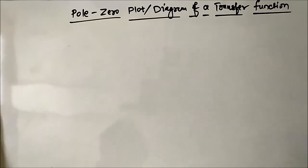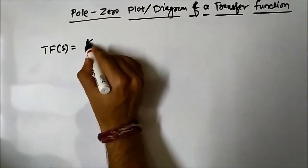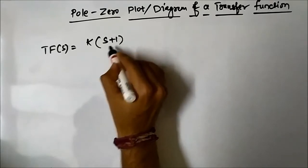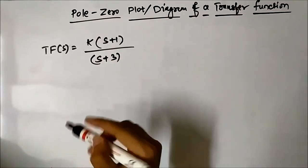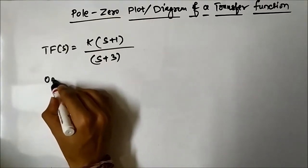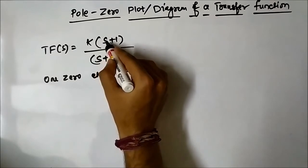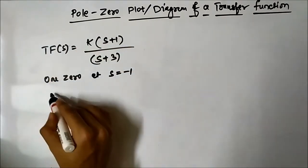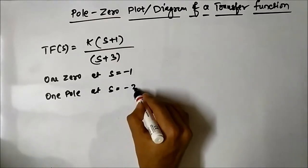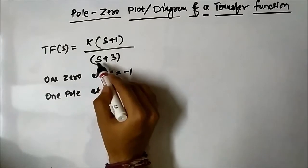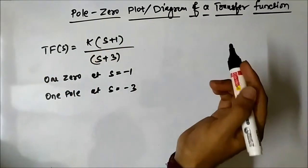Let us start with a simple transfer function. Let's say the transfer function is given by k(s+1)/(s+3). This transfer function has one zero at s equals minus 1 — if we substitute s equals minus 1, the numerator becomes 0 and the transfer function becomes 0 — and one pole at s equals minus 3. If we substitute s with minus 3, the denominator becomes 0.